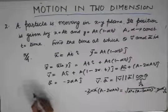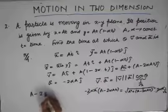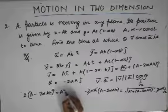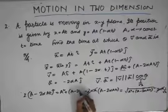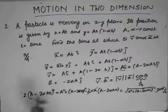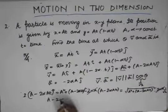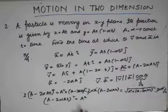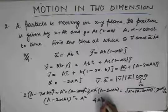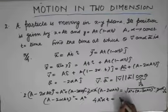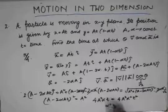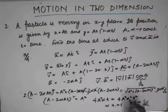Simplifying, the 2·alpha·a terms on both sides cancel. Squaring both sides gives (a minus 2·alpha·a·t)² times 2 equals a² plus (a minus 2·alpha·a·t)². Rearranging, (a minus 2·alpha·a·t)² equals a². Expanding and simplifying, we get 4a²·alpha·t equals 4a²·alpha²·t², which gives alpha·t equals 1, so t equals 1 by alpha. This is the final answer.